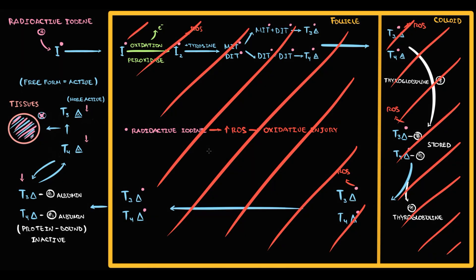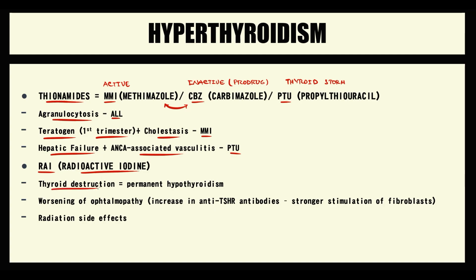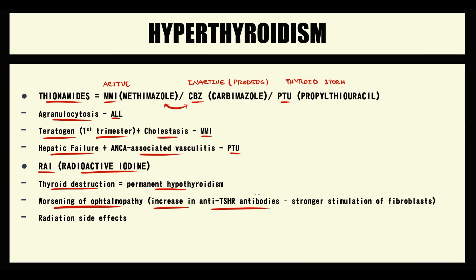The drawback of radioactive iodine is irreversible damage. Unlike thionamides, it does not just block an enzyme — it causes death of thyroid cells. Once destroyed, the cells cannot be compensated, leaving the patient in permanent hypothyroidism. Radioactive iodine can also worsen ophthalmopathy: once thyroid cells are destroyed, more free anti-TSH receptor antibodies are available to act on fibroblasts, stimulating higher production of glycosaminoglycans, making proptosis more severe. Radiation side effects are also possible.